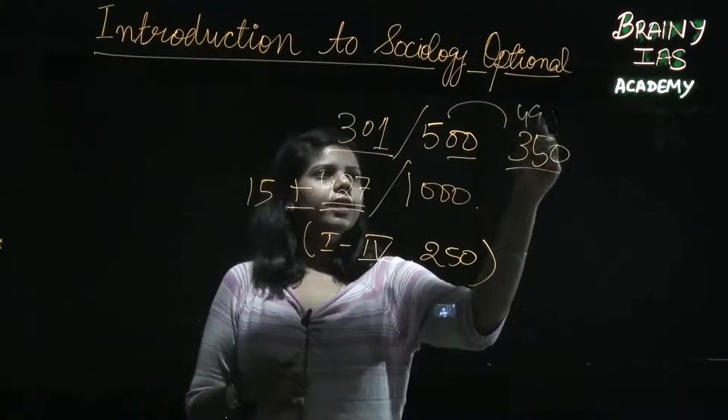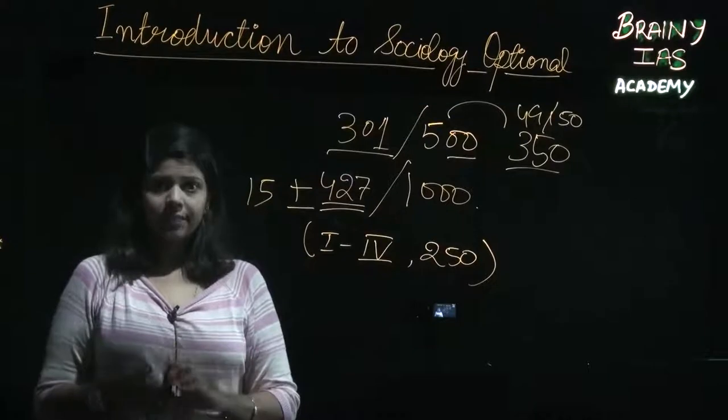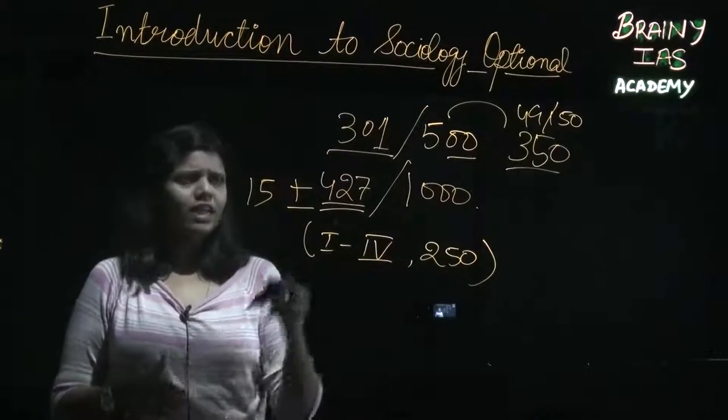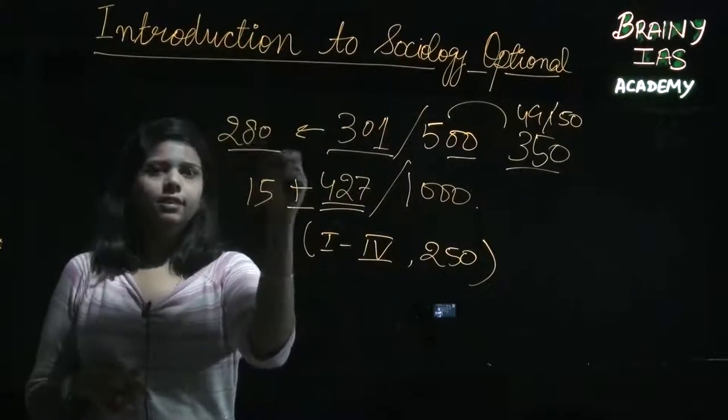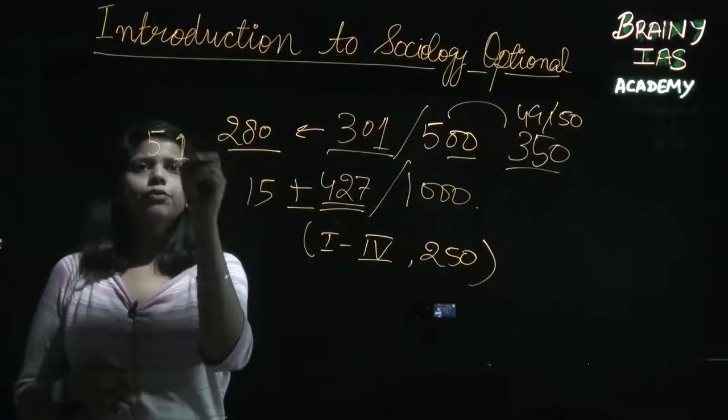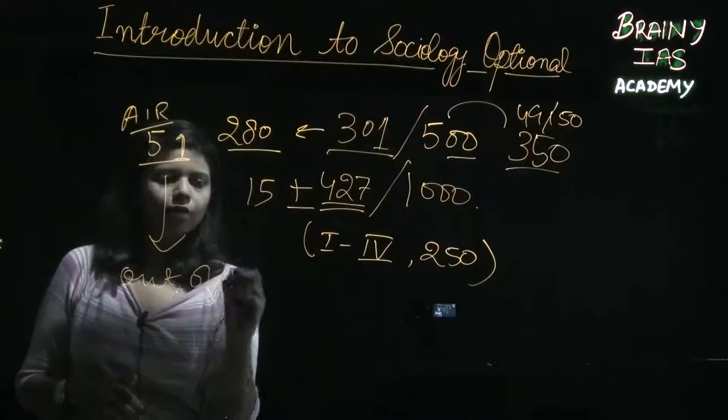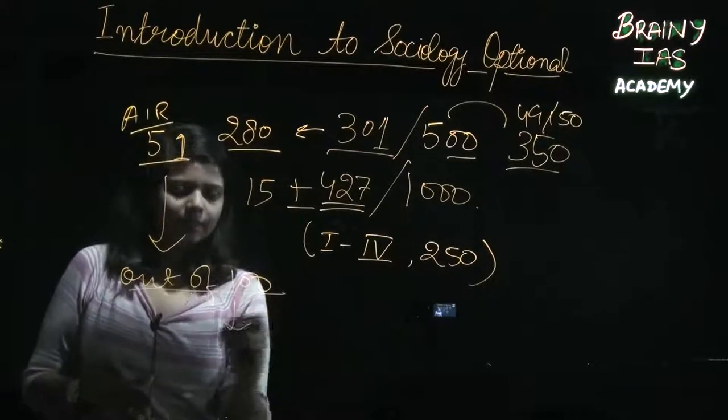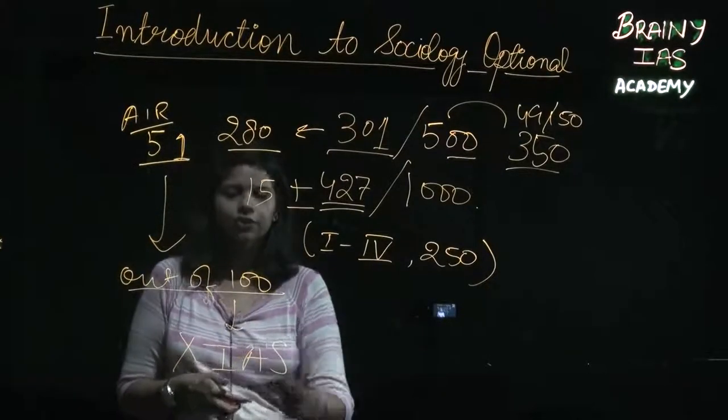And mind you, a 50 marks leap in the UPSC exam is like a deal breaker or deal maker. If I just hypothetically reduce my marks to 280, 21 marks slashed altogether, that would bring me down from AIR 51 to out of 100. Such narrow is the competition. Going out of 100 means no IAS or whatever the first preference you might fill. Generally, it is IAS.